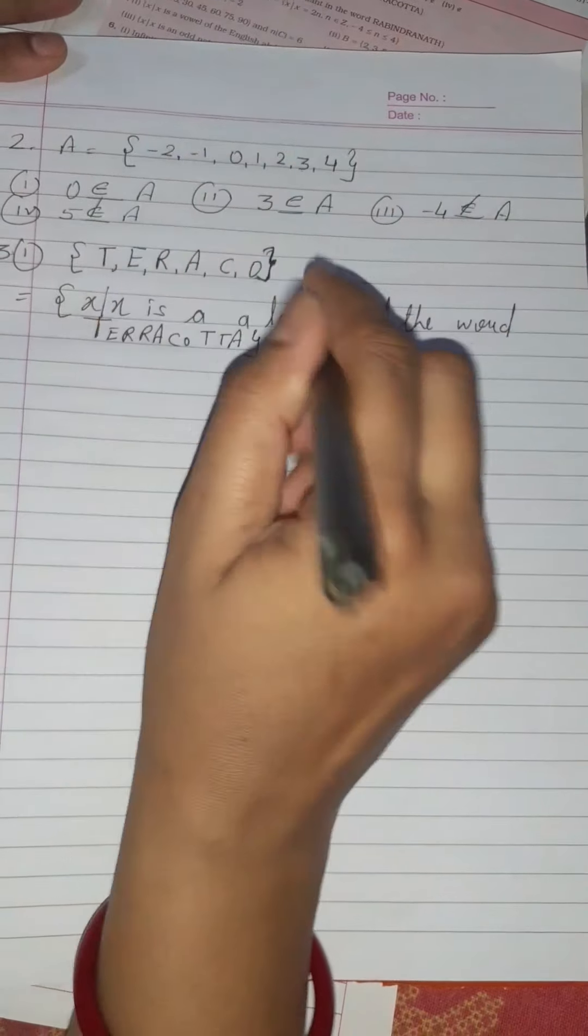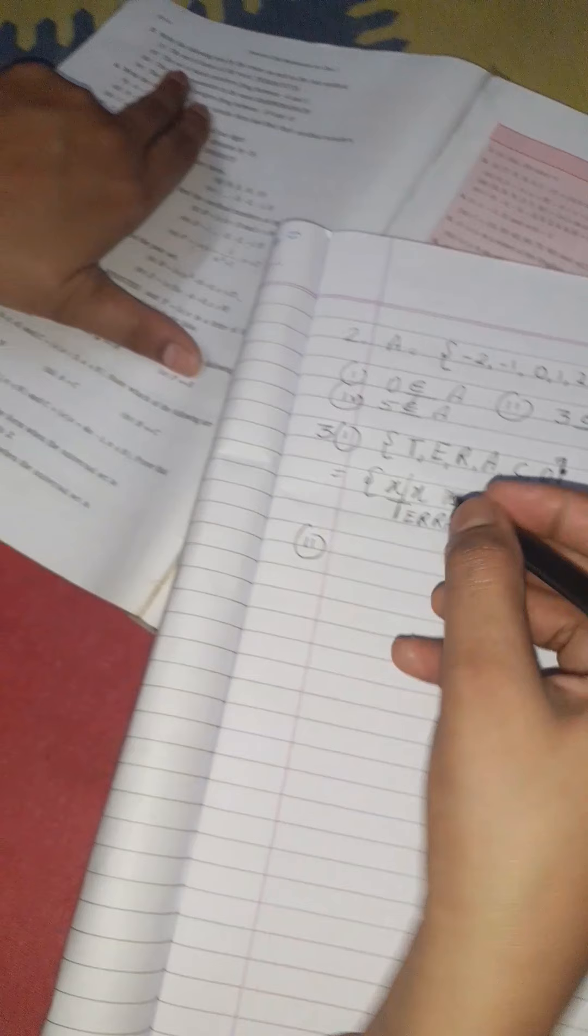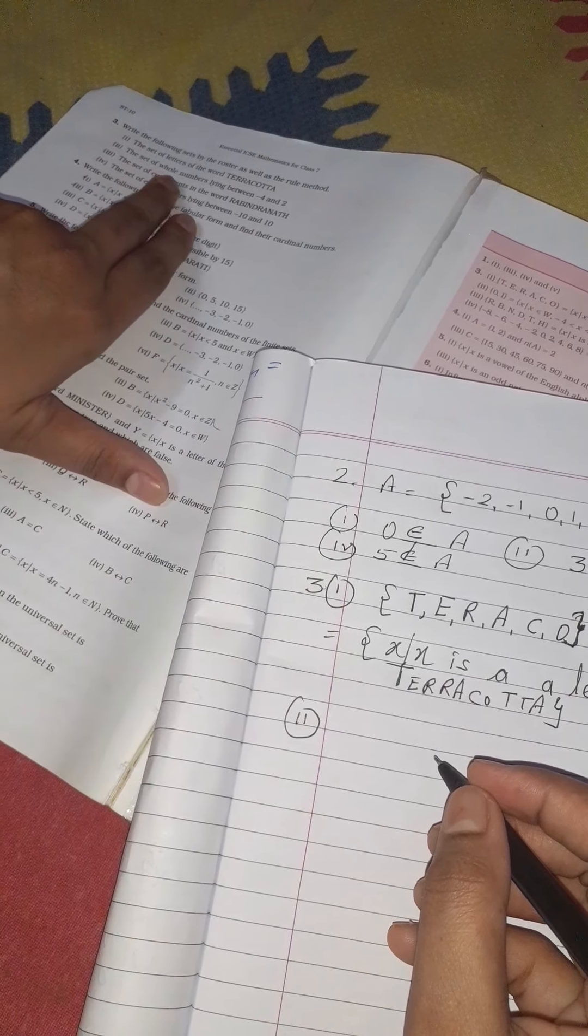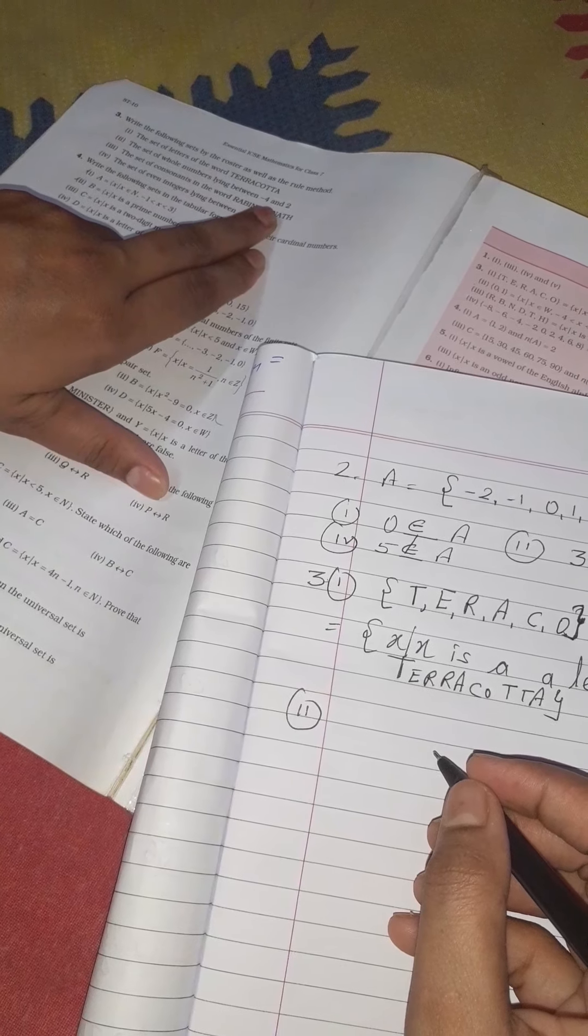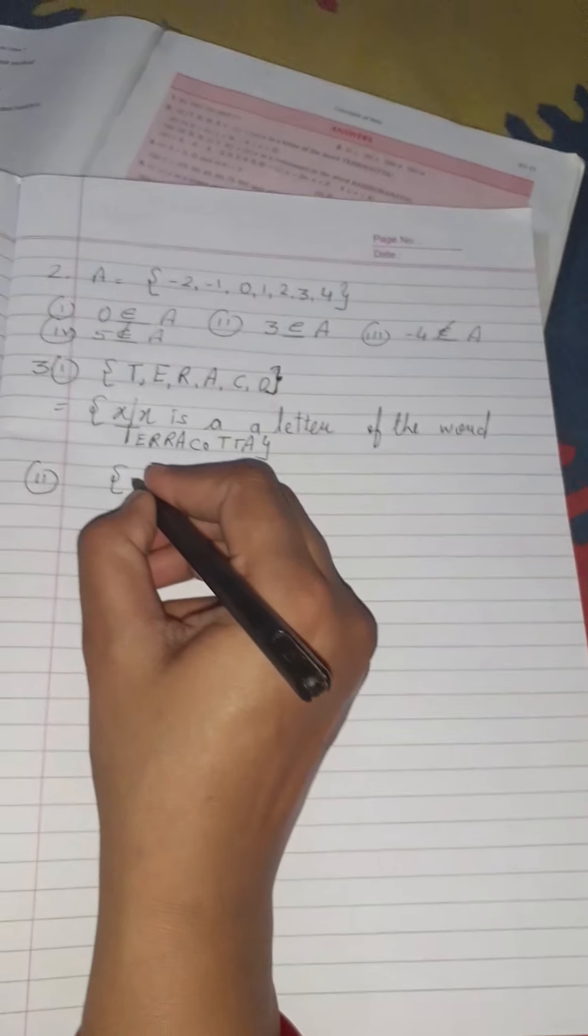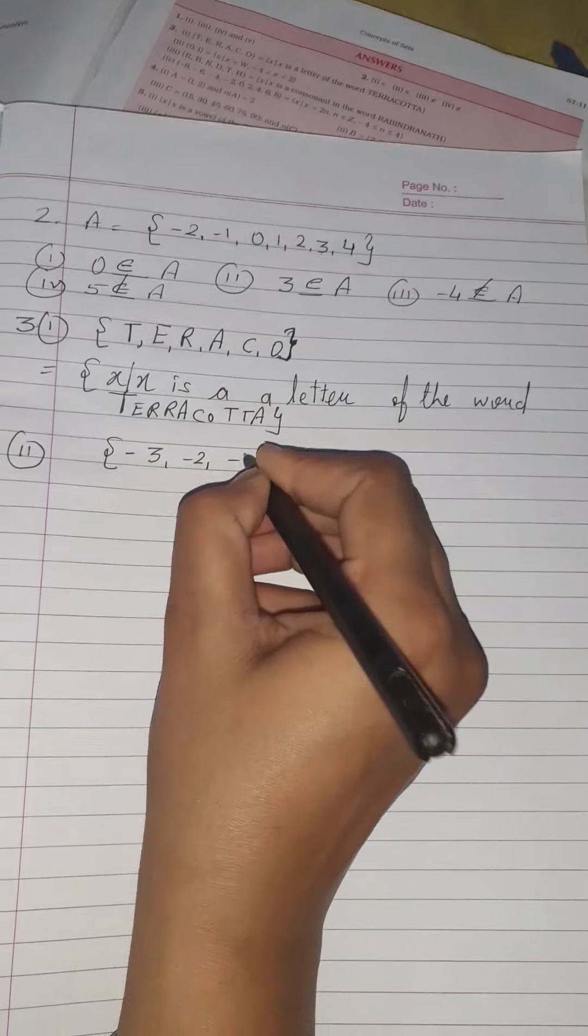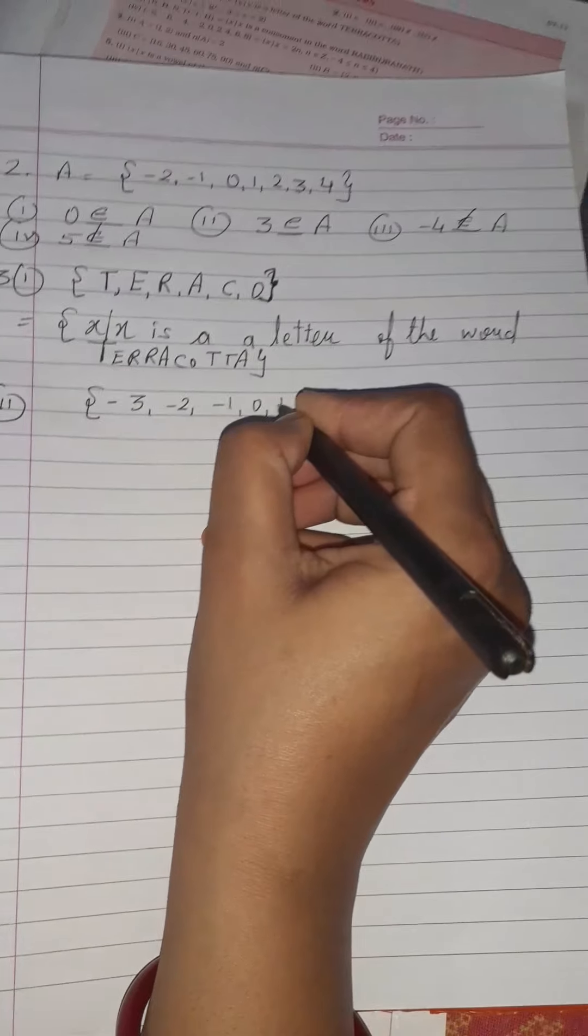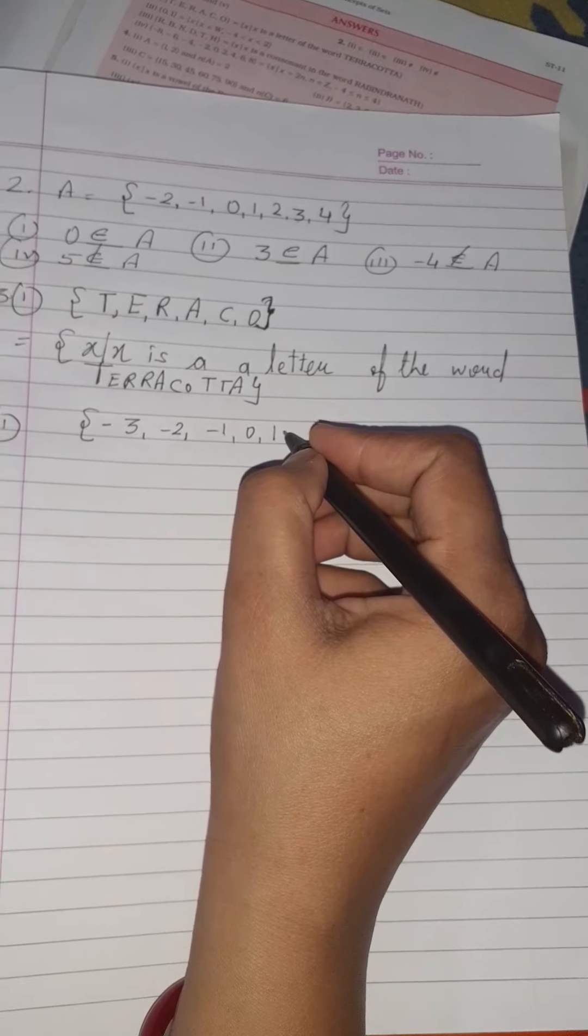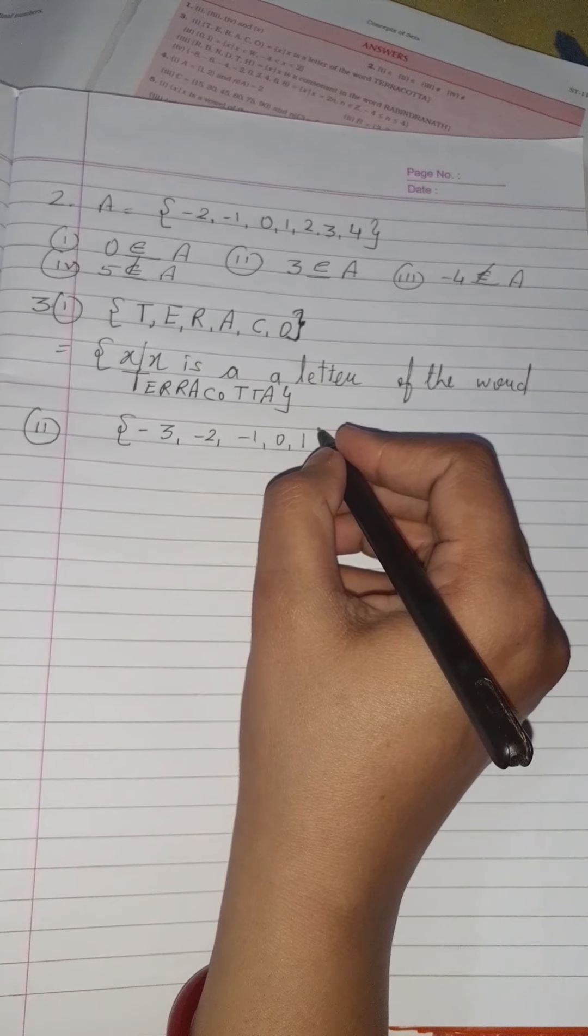Second question I'm explaining: the set of whole numbers lying between -4 and 2. First in roster method. After -4 the numbers are -3, -2, -1, then 0, then 1, and 2. You have to write the numbers between -4 and 2, so don't write 2.